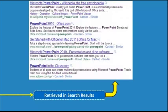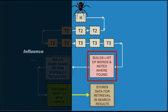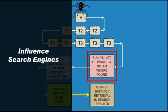Coming back to the schematic — take a close look and you will understand that the place for concern to you as the website owner is when the search engine builds the list of words from your web page. This is where you can influence the search engine by giving clear signals as to which words in the page are more important.